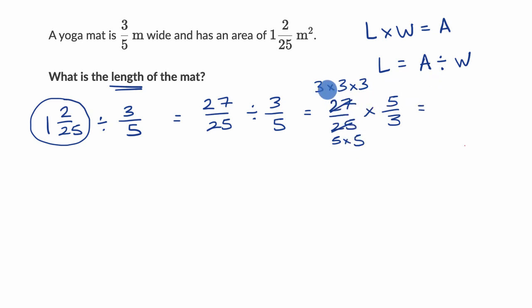So this is going to be equal to, in our numerator, we're going to have three times three times three times five. And then in our denominator, we're going to have five times five times three. And then we can reduce this a little bit.